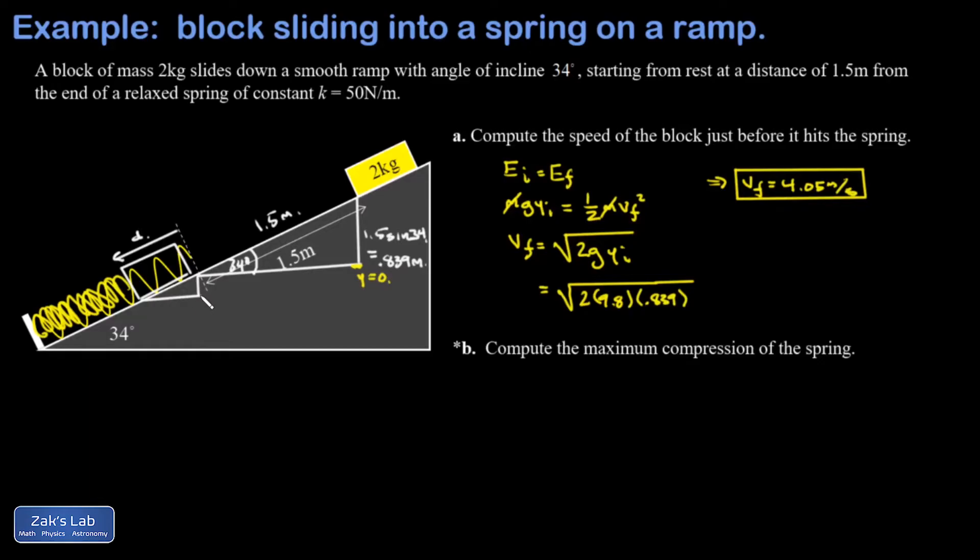If I use the same zero for potential energy then my final height for this block is going to be listed as a negative number. Notice that I still have a triangle similar to the original triangle, that angle is 34 degrees and the length of this vertical side is d sine theta. So that's a magnitude for that but the actual final y coordinate is negative d sine theta.